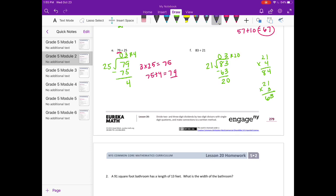And to check, I would do 3 times 21 equals, as we know from this, 63. And 63 plus 20 is 83. So that checks out.